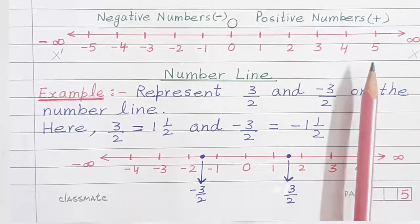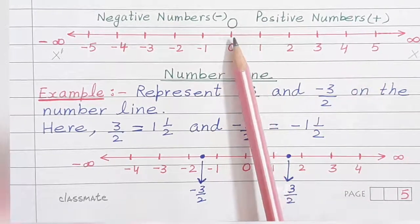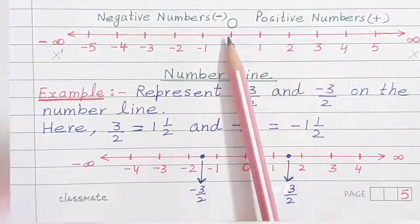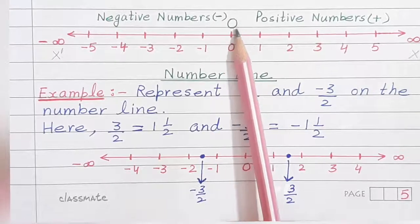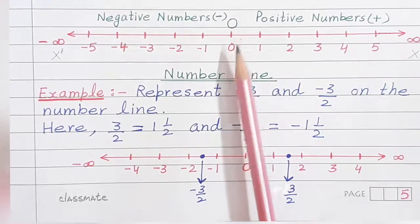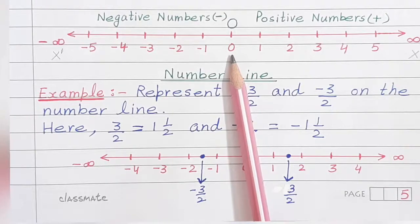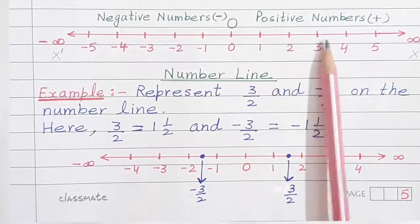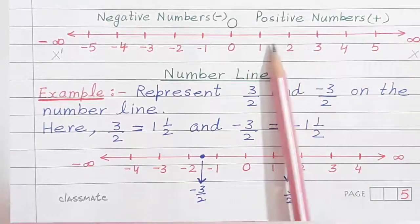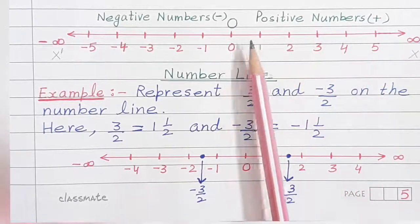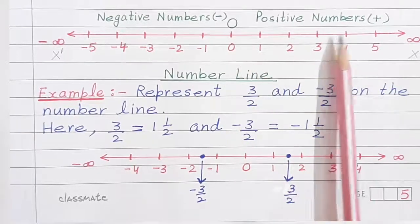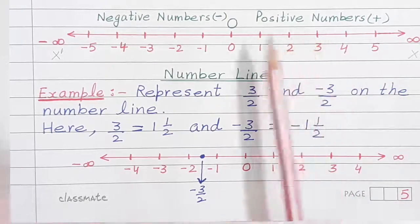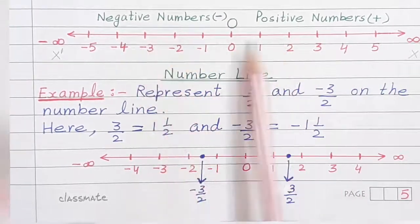Now, divide the line into two equal parts and the centermost point is O. It represents 0. Now select a unit of length — maybe 1 centimetre, 2 centimetre, whatever you take. All the lengths should be equal. The length interval from each direction should be equal.